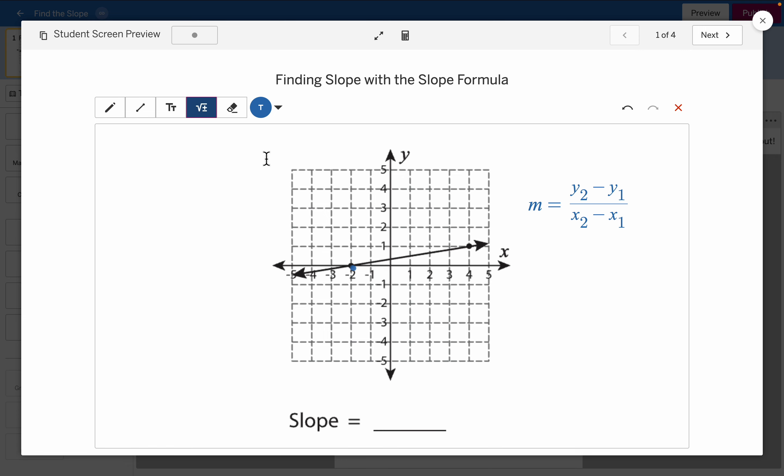The coordinates of this point right here is, you get the X value first. So you need parentheses, negative two, zero. All right. So that's this point right here.